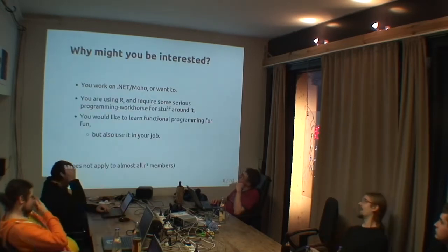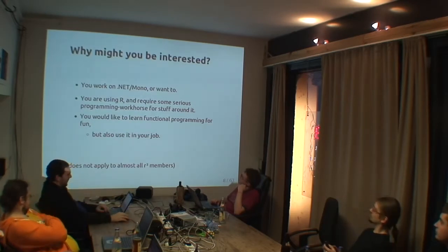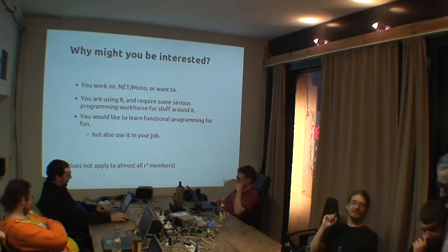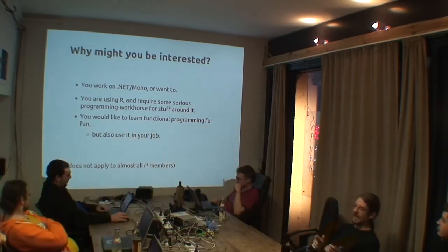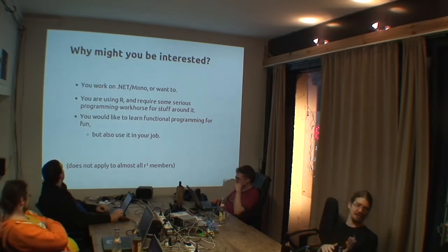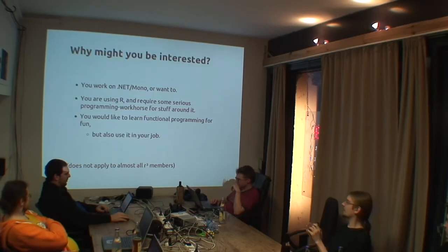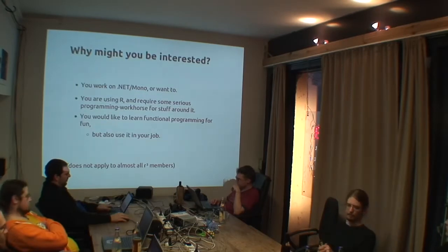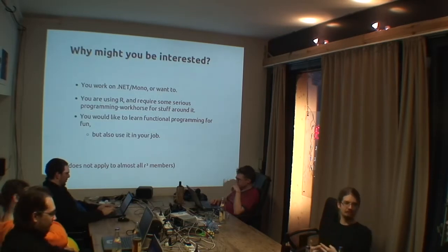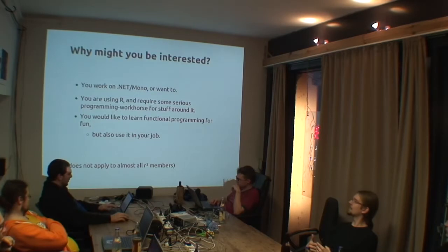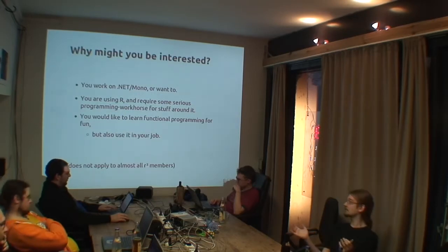If you are using R and need some heavy lifting, or you just want to learn functional programming and use it in your job and get paid for it, then it's also a great language. Because Java is so bad that people are used to using other languages on the JVM — like JRuby, Clojure, Scala. But on .NET, many people still use what comes with Visual Studio and aren't used to workflows with other languages. The good part is, if you work in a company using .NET, you probably use Visual Studio, and F-Sharp is a first-class citizen there — it's developed by Microsoft.